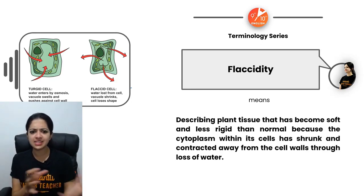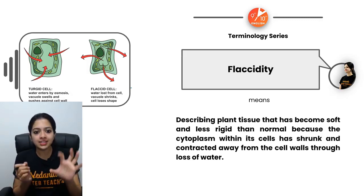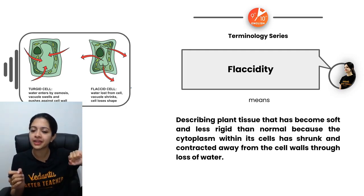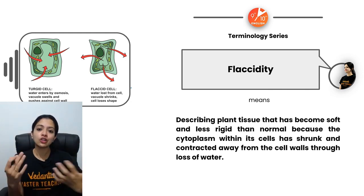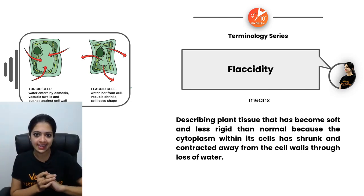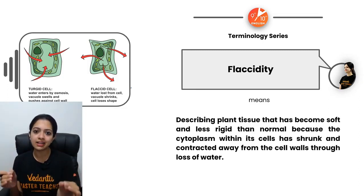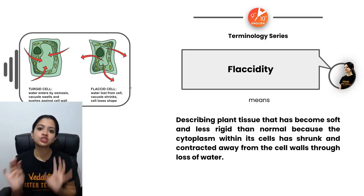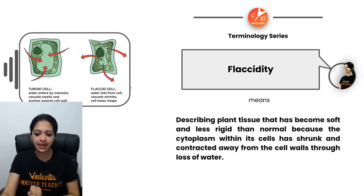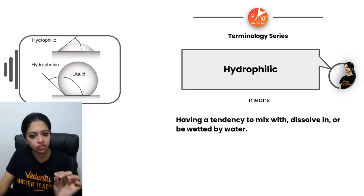Flaccidity is closely related to turgidity — it is the opposite. Plant tissues are less rigid than normal; not completely shrunken and dehydrated, but having lost a lot of water compared to the turgid state. A flaccid cell is one where water has been lost from the cell vacuole, causing it to shrink and lose its full shape.